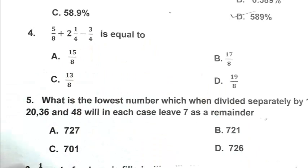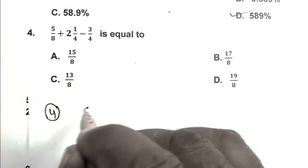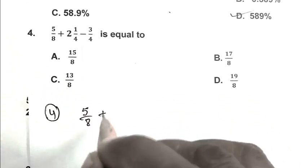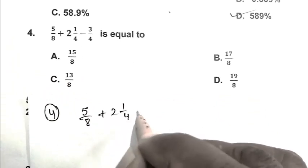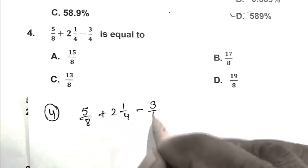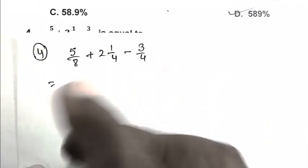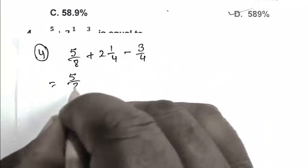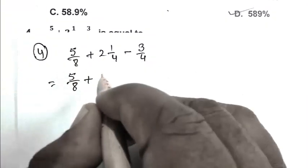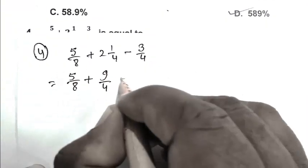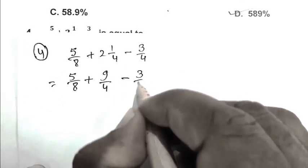Question number 4: 5 upon 8 plus 2 and 1 fourth minus 3 fourth. We write 5 upon 8 plus 9 upon 4 minus 3 upon 4.